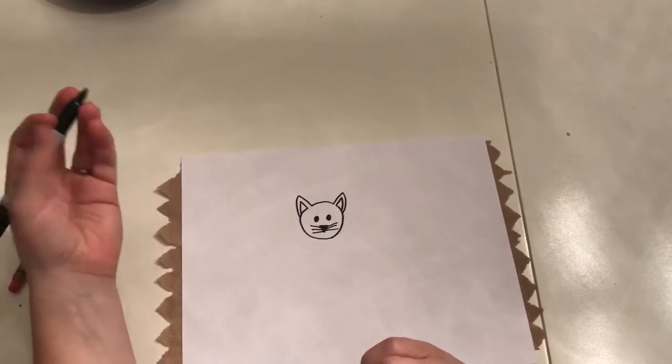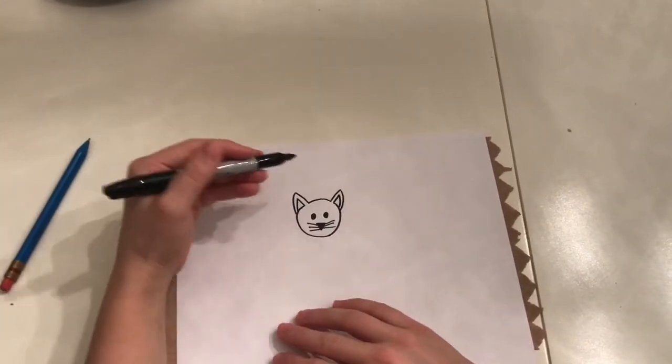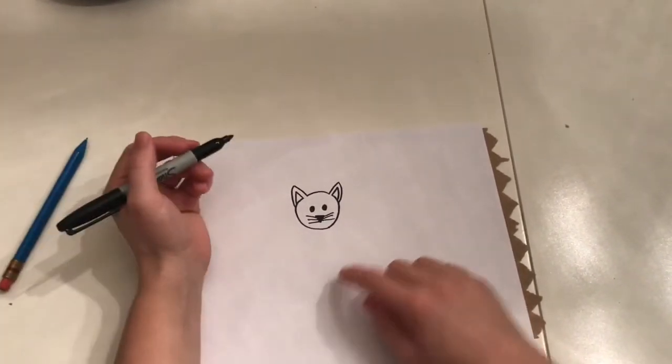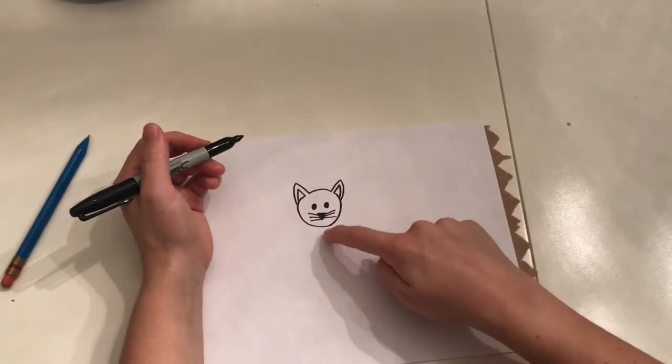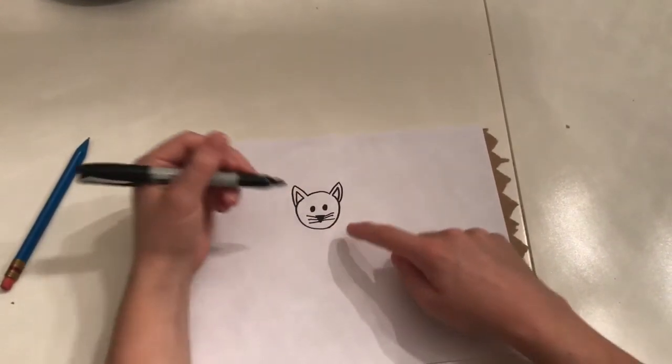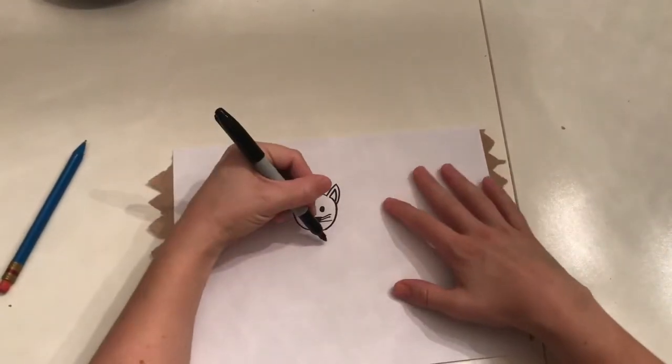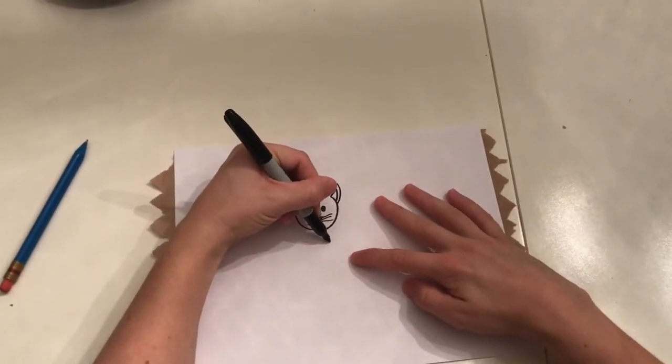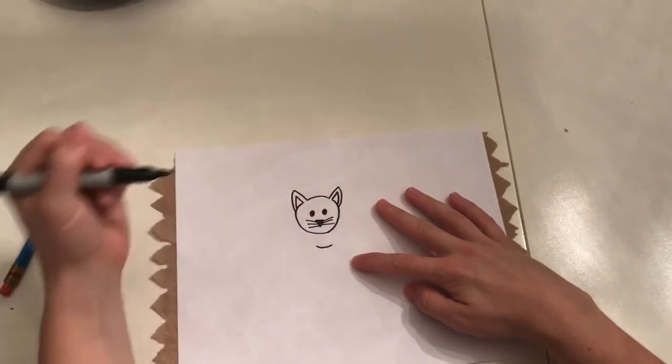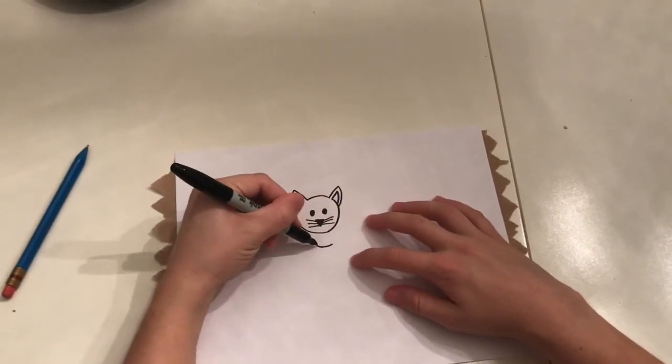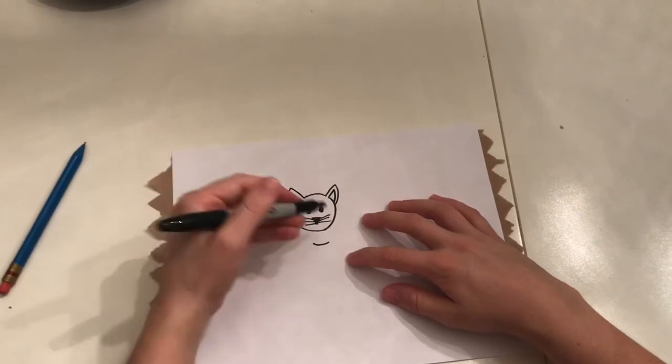Now we're going to make our cat sitting down because it's a nice easy pose to draw. So we're just going to start a little bit below the head. And we're going to draw kind of a curvy line. Almost like a T. The top of a T. But slightly curved. Not quite a U. Just the top of a T.